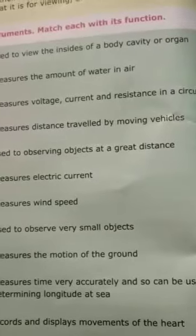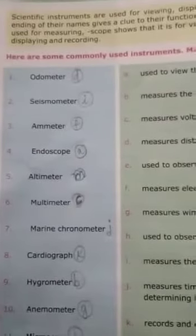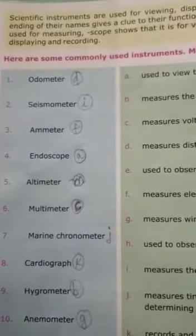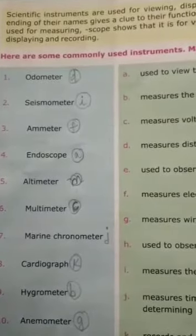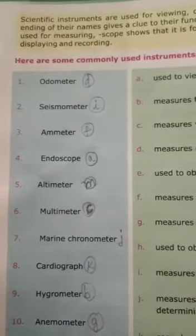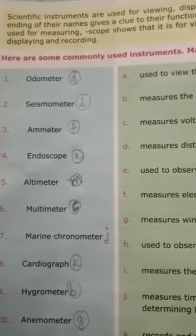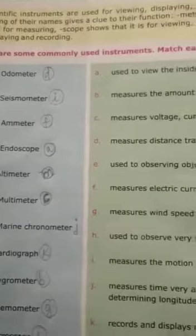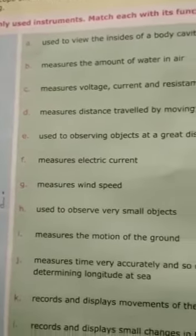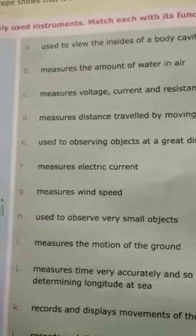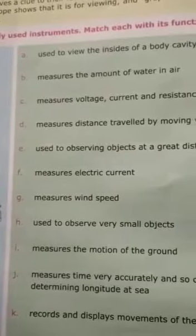Next is seismometer. The answer is I: measures the motion of the ground. That is about the movement that is taking place in the ground.